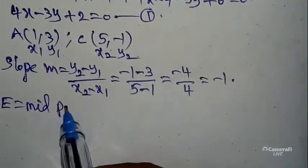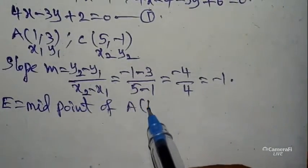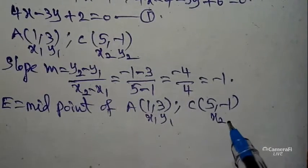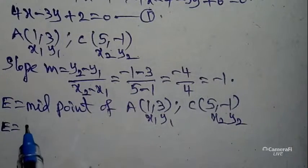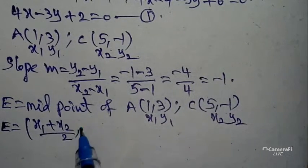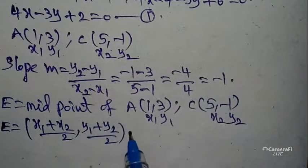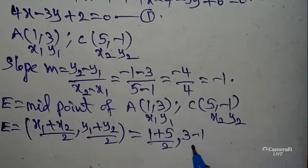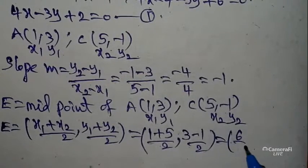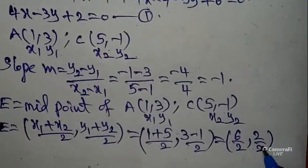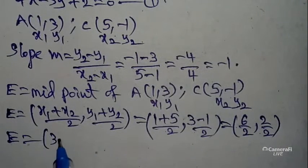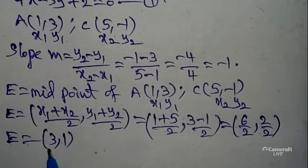E is the midpoint of AC. A is (1, 3) and C is (5, -1). Using the midpoint formula: x = (1 + 5)/2 = 6/2 = 3, y = (3 + (-1))/2 = 2/2 = 1. So E is (3, 1) and slope m = -1.